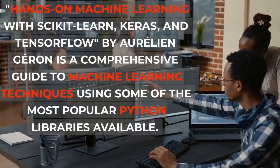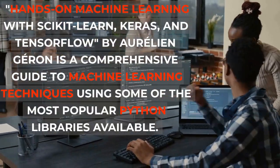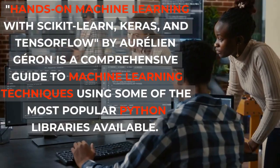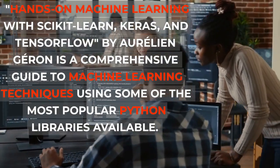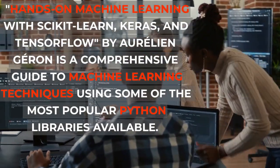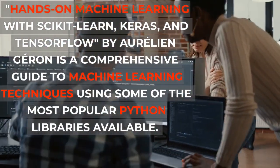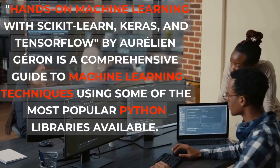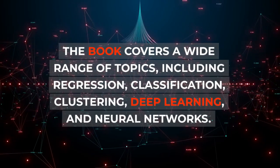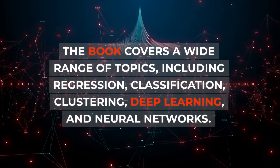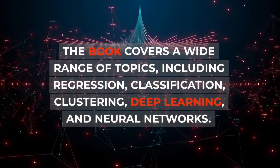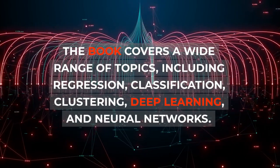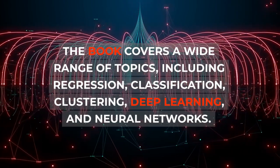Hands-on Machine Learning with Scikit-Learn, Keras, and TensorFlow by Aurelian Jaron is a comprehensive guide to machine learning techniques using some of the most popular Python libraries available. The book covers a wide range of topics, including regression, classification, clustering, deep learning, and neural networks.